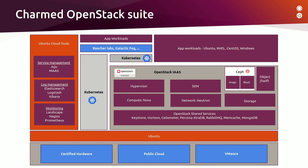You can also use other hypervisors. As for the SDN, it is really an SDN of your choice. For storage purposes, you can use Ceph and Swift for image, block, and object storage respectively. On top of the OpenStack cloud, you can run your application workloads, but you can also run them on top of Kubernetes. Kubernetes is usually deployed on top of OpenStack, but you can also run Kubernetes directly on bare metal. As depicted on the left, there is a set of Ubuntu cloud tools used to operate the whole environment.